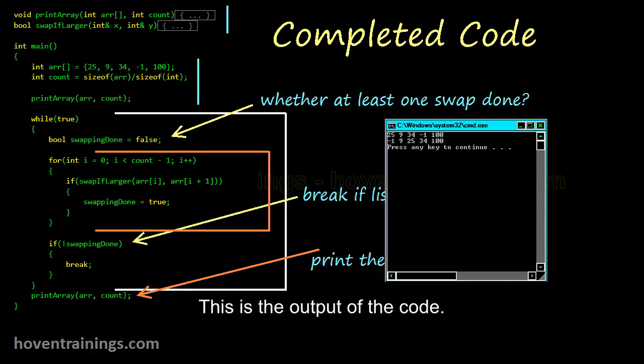This is the output of the code. The first line is the array before swapping. The last line is the array after it has been swapped.